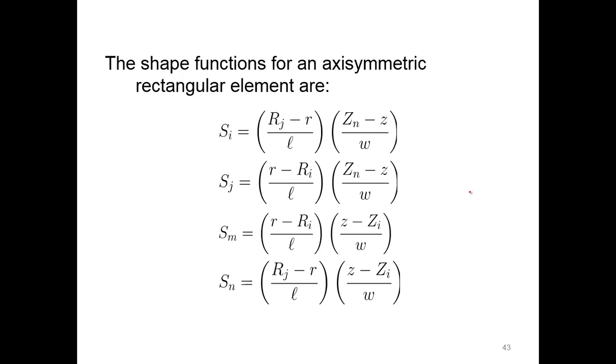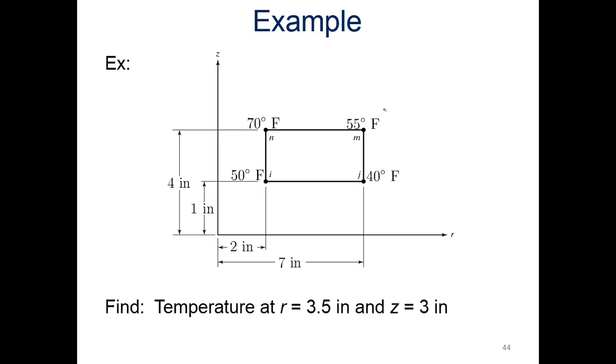Substitute those into the 2D linear rectangular shape functions, and we obtain the axisymmetric rectangular shape functions. For axisymmetric rectangular elements, our shape functions become pretty much the same form, allowed substitution for R and X as would be expected.